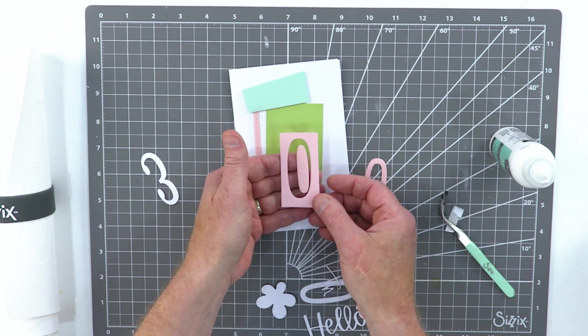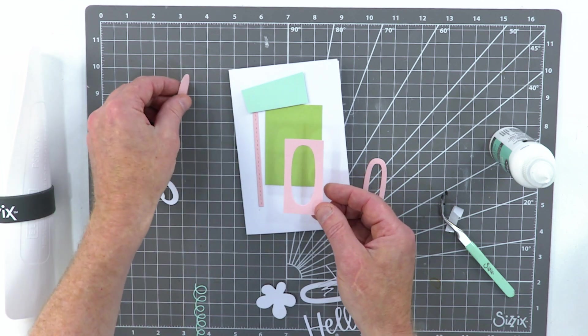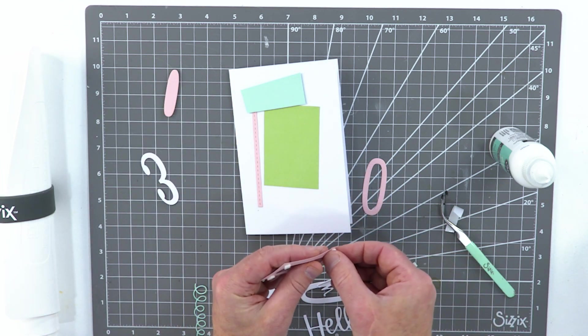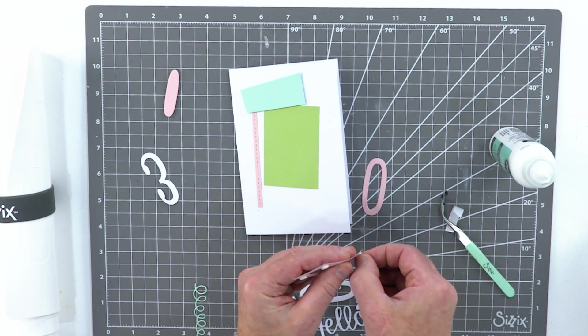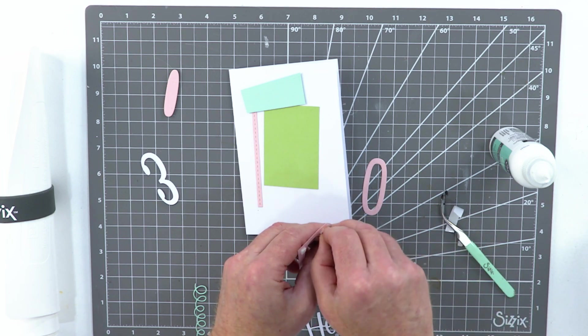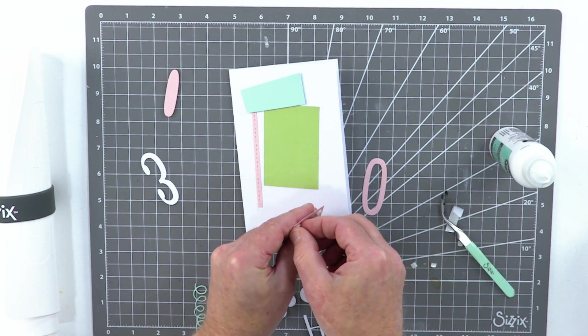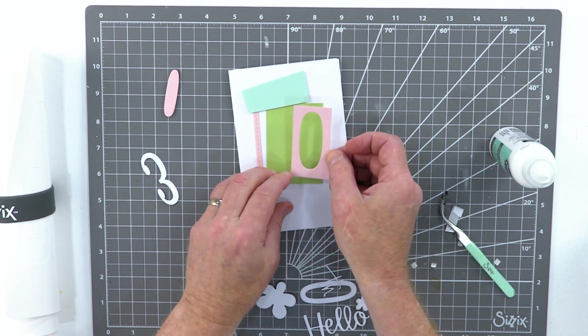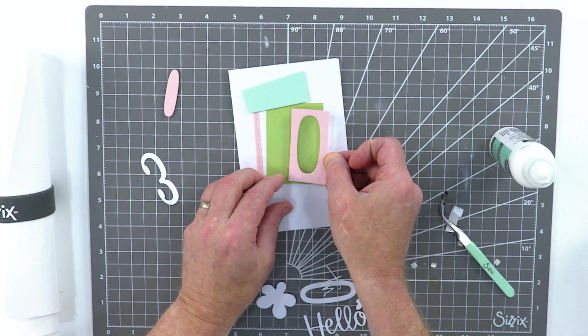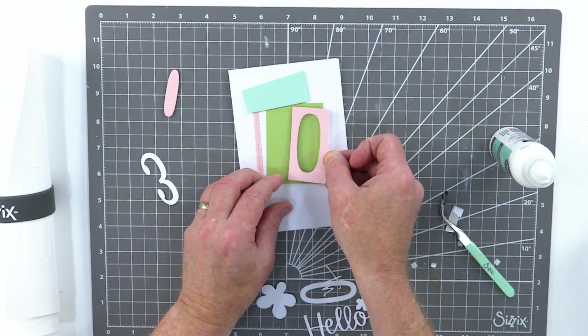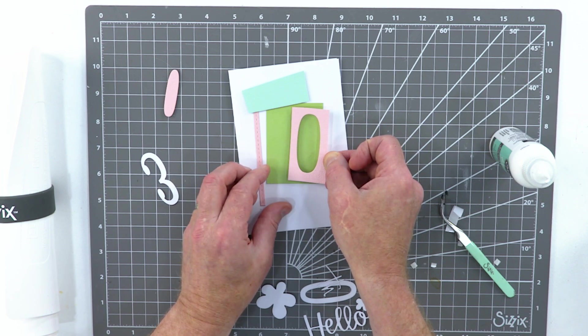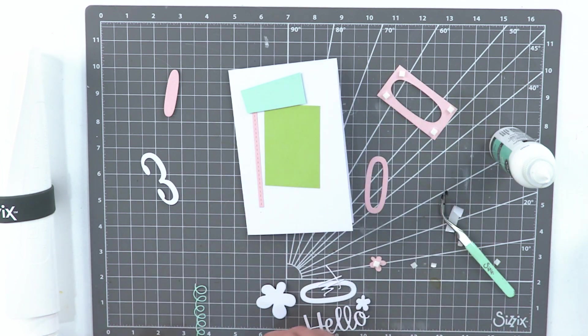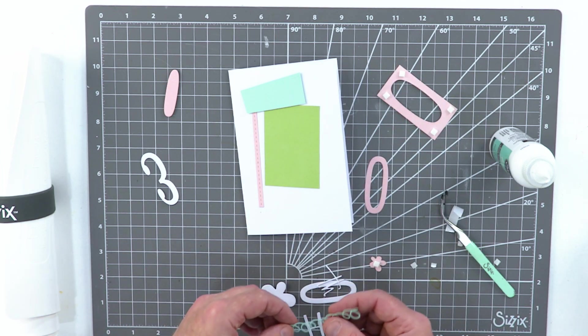Now obviously I want to put the, it's a 30th birthday, so we're going to pop that number in somewhere. And I've got my number three as well ready to go. Now this is interesting, because even though I cut the zero from the pink, I actually used the outside. So what we think of as the negative, this bit would usually be cast aside, but today I'm going to be using both the number and the negative.